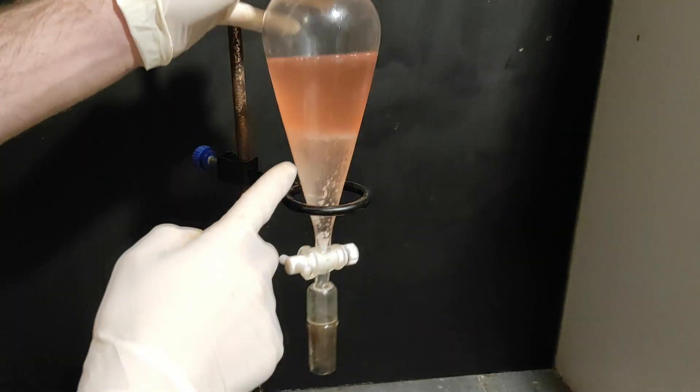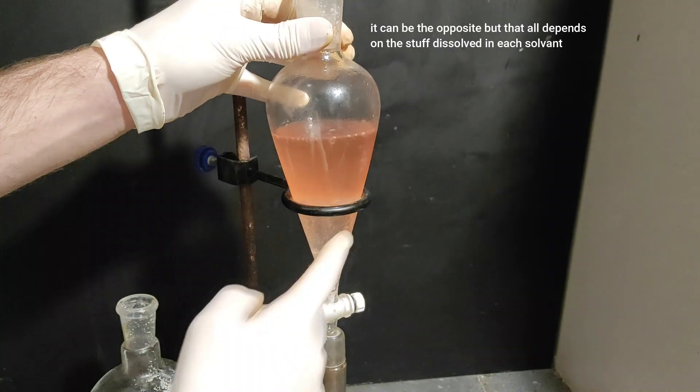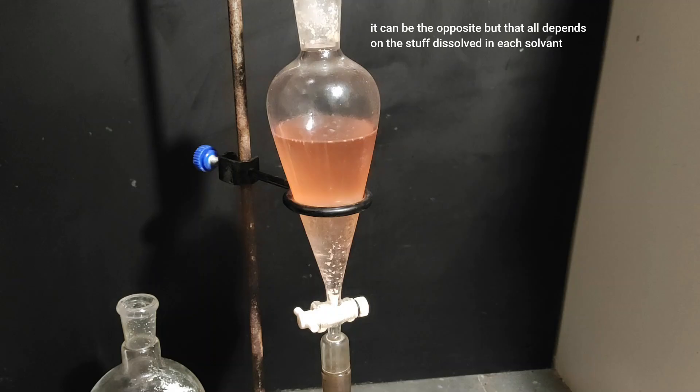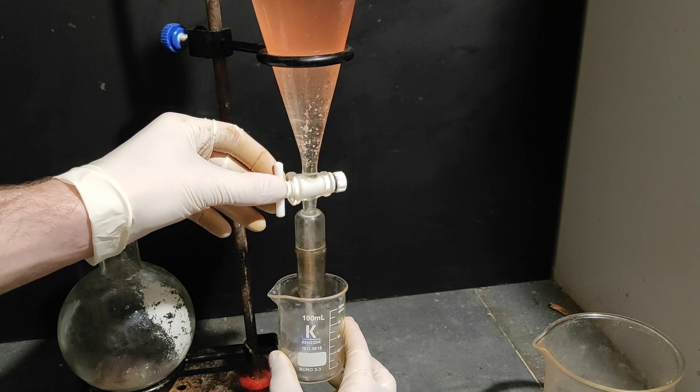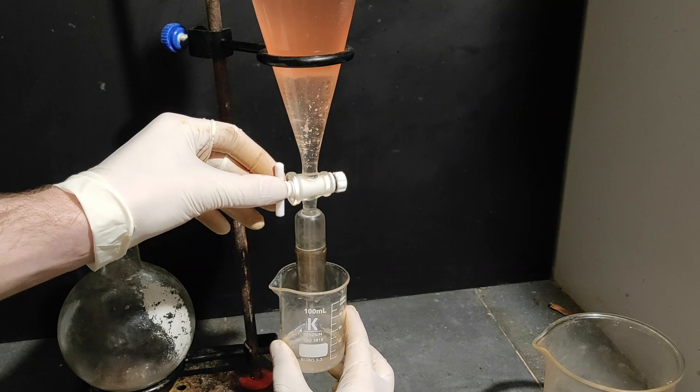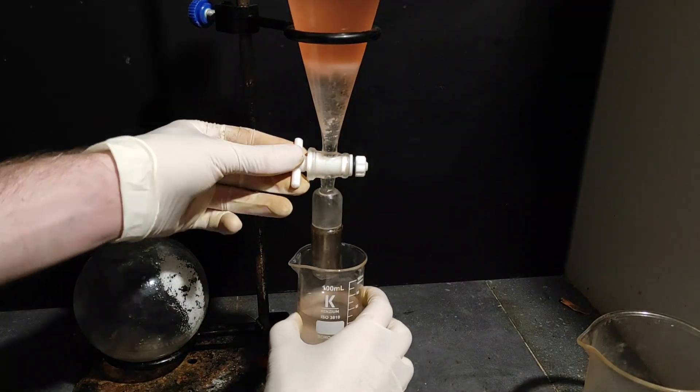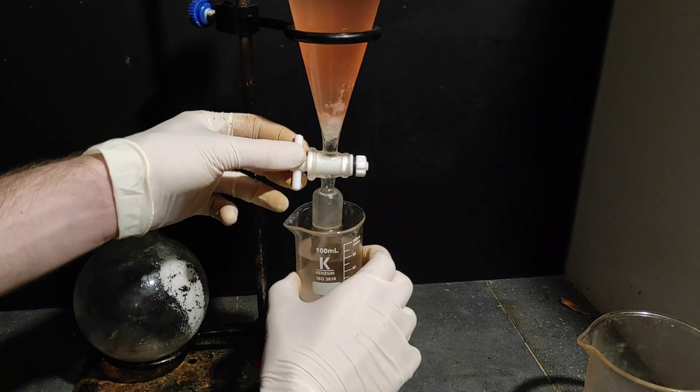For me the bottom layer was the organic one which seems very weird but if it works don't question it I guess. I repeated this process a second time to obtain almost 70 milliliters of a solution of dichloromethane and our methyl salicylate. By this point the whole lab started to smell like it which was pretty cool.